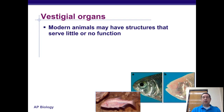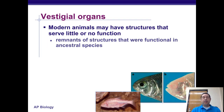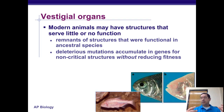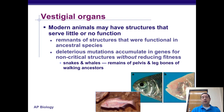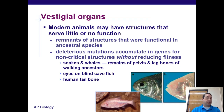Vestigial organs are structures in modern animals that serve little or no function. They are remnants of structures that may have been functional in their ancestors. Deleterious mutations accumulate in genes for non-critical structures without reducing fitness, so these organs change. Snakes and whales both have pelvic and leg bones, yet neither can walk. The eyes in blind cave fish and the human tailbone are also examples of vestigial structures — things that may have had a function at one time but don't anymore.